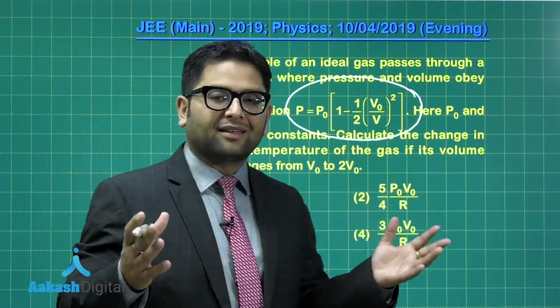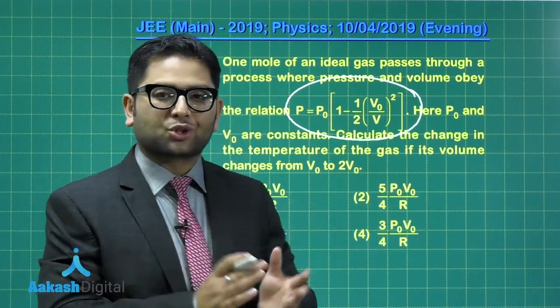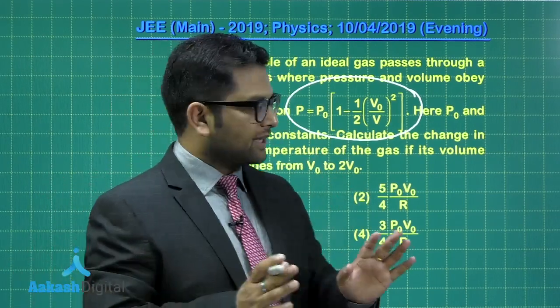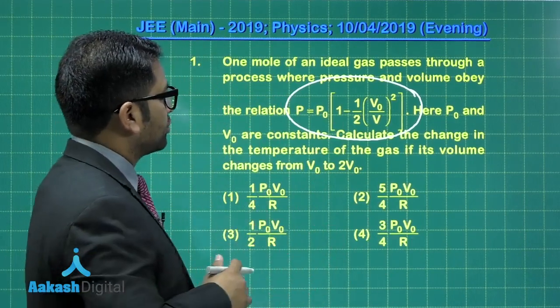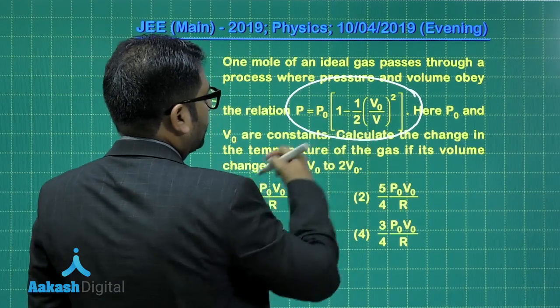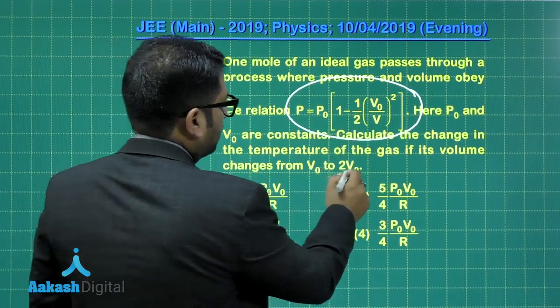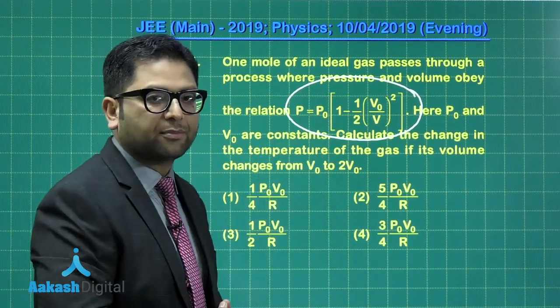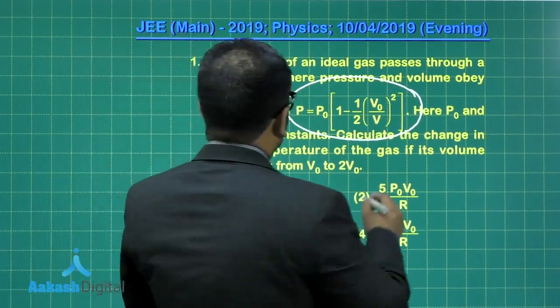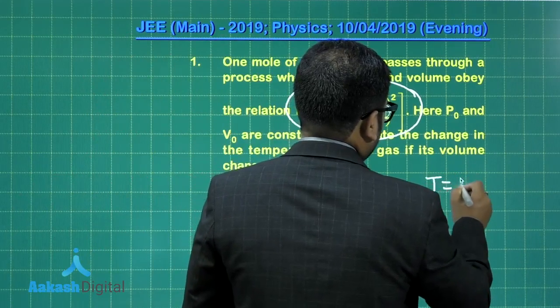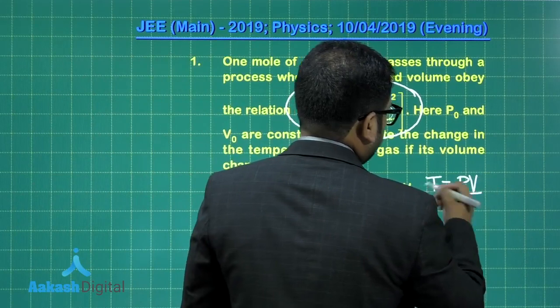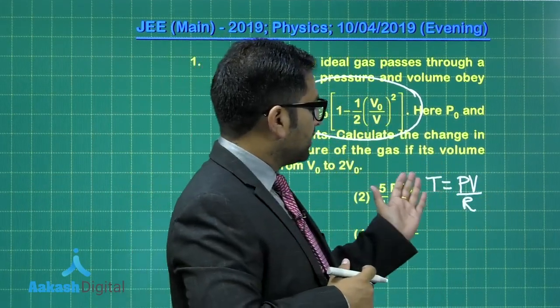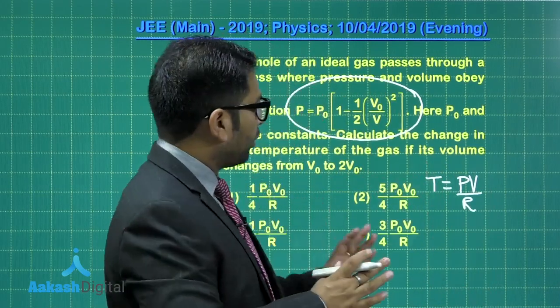Nothing can be a better gift than this for question number one. This must have certainly elevated your confidence level because it's very straightforward. What you can do is for volume V₀ calculate the pressure, and for volume 2V₀ calculate the pressure. That's going to be the initial and final pressure. Then we know that temperature equals PV/nR, and since the number of moles is one, T equals PV/R. So all is done.